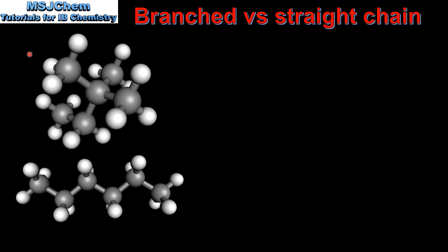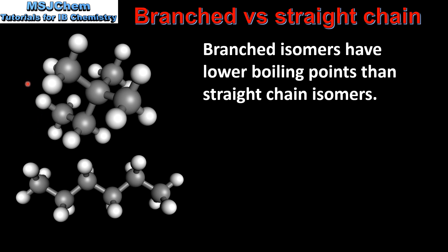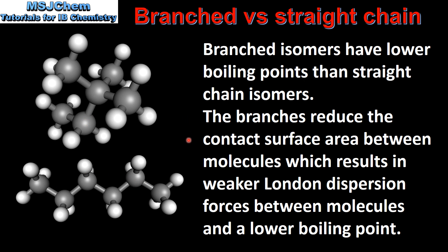Next we look at another factor that affects the boiling points of organic compounds, which is branched versus straight chain isomers. Here we have two structural isomers with the molecular formula C6H14. Branched isomers have lower boiling points than straight chain isomers, so the isomer on the top will have a lower boiling point than the isomer on the bottom. The branches reduce the contact surface area between molecules, which results in weaker London dispersion forces between the molecules and a lower boiling point.